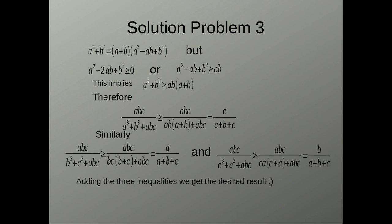A cube plus B cube is A plus B into A square minus AB plus B square but A square minus AB plus B square is greater than or equal to AB. So, A cube plus B cube is greater than or equal to AB into A plus B.